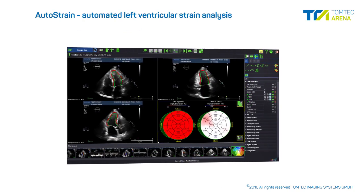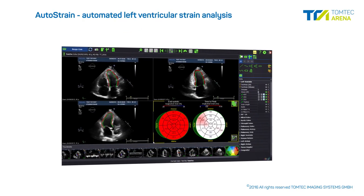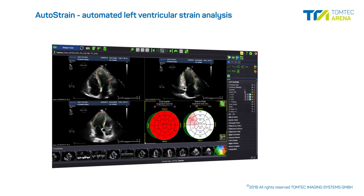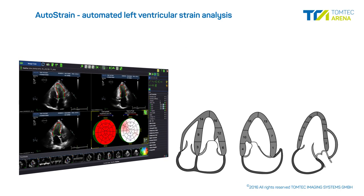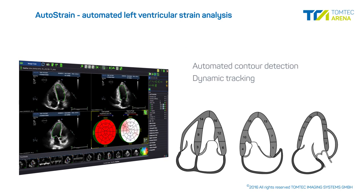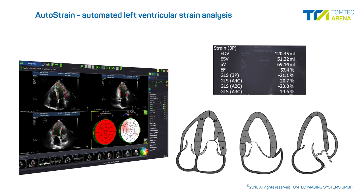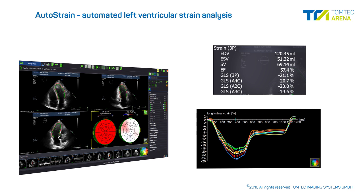The AutoStrain module offers a state-of-the-art automated left ventricular strain analysis for up to three apical long axis views. Automated contour detection combined with dynamic tracking delivers accurate and highly reproducible global and regional LV function measurements. Analysis results are readily available in a variety of displays.